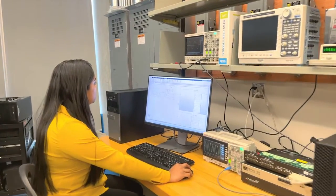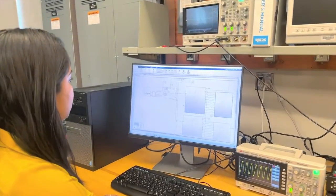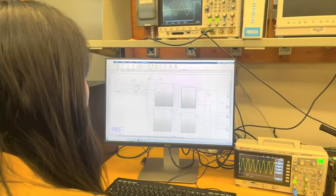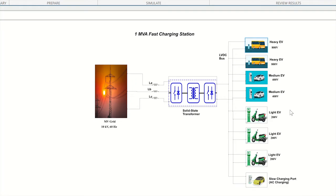A MATLAB model is simulated to validate the proposed configuration. Three types of EVs are connected and charged using 2C rate and based on a constant current charging algorithm. The EV charging voltages are selected as 800V, 400V and 200V for heavy, medium and light EVs respectively.